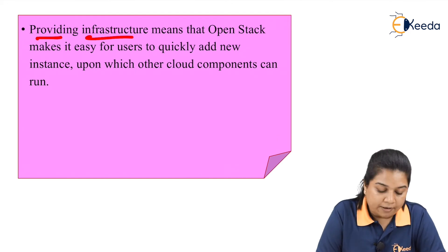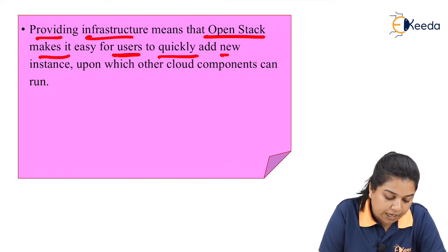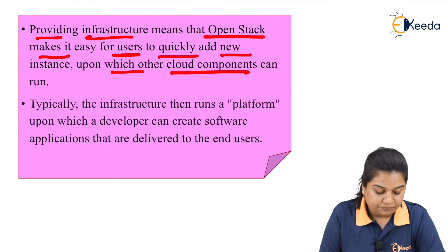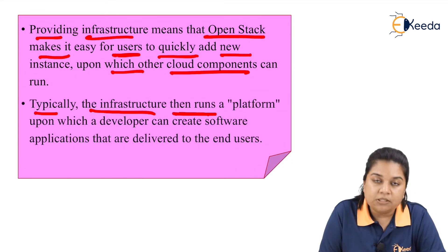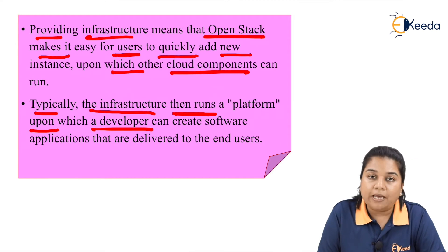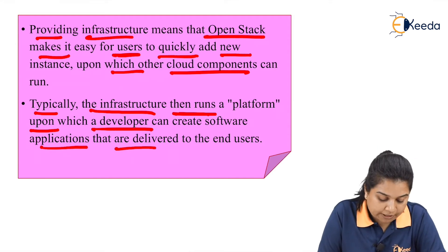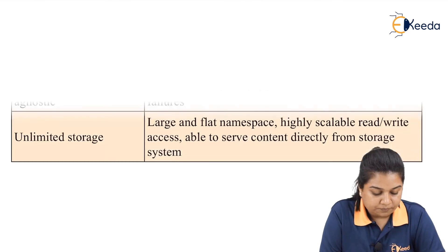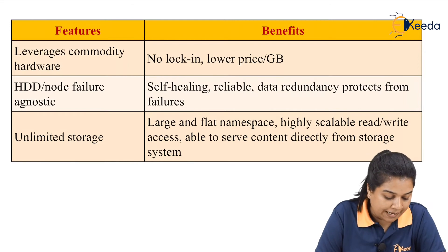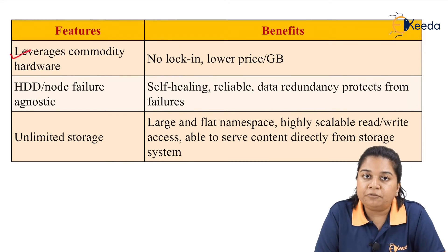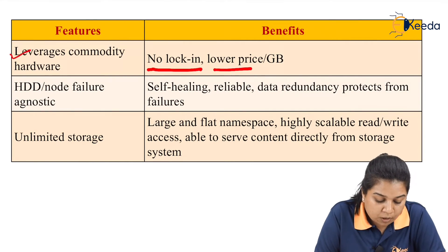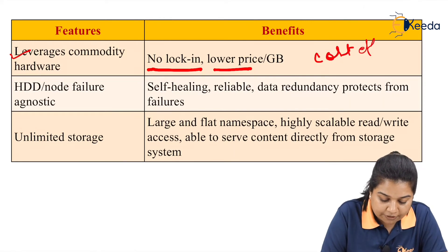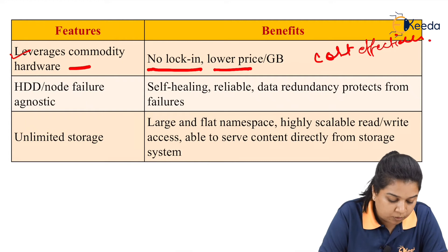Providing infrastructure means that OpenStack makes it easy for users to quickly add new instances upon which other cloud components can run. Typically, the infrastructure then runs a platform upon which a developer can create software applications delivered to end users. One key feature is that it leverages commodity hardware, and the benefit of this feature is no lock-in and a lower price per GB — meaning cost savings and cost effectiveness.